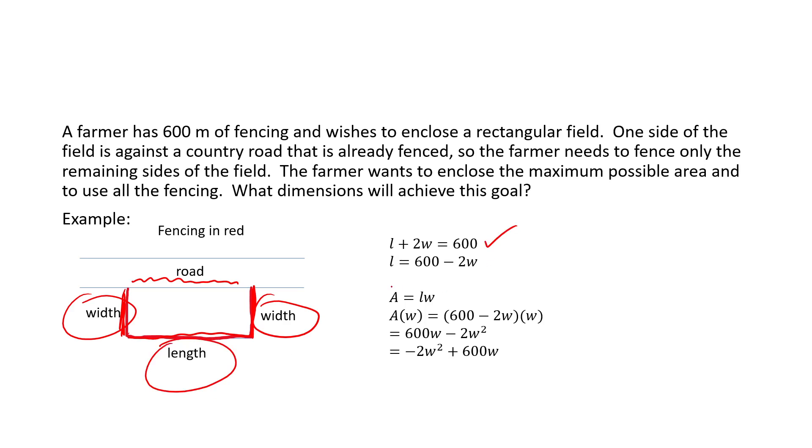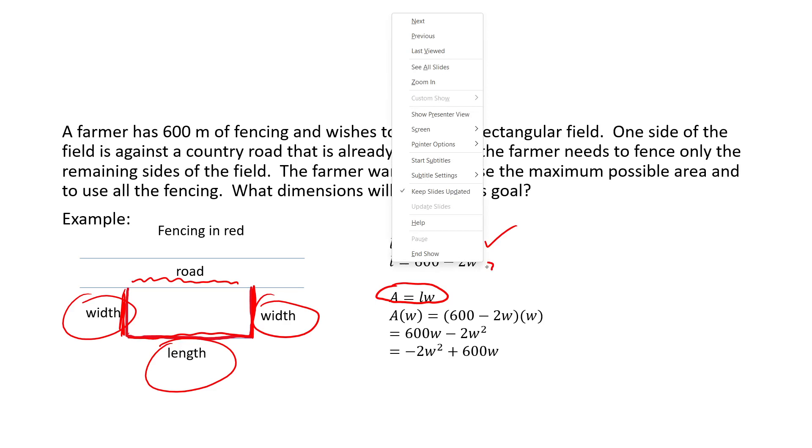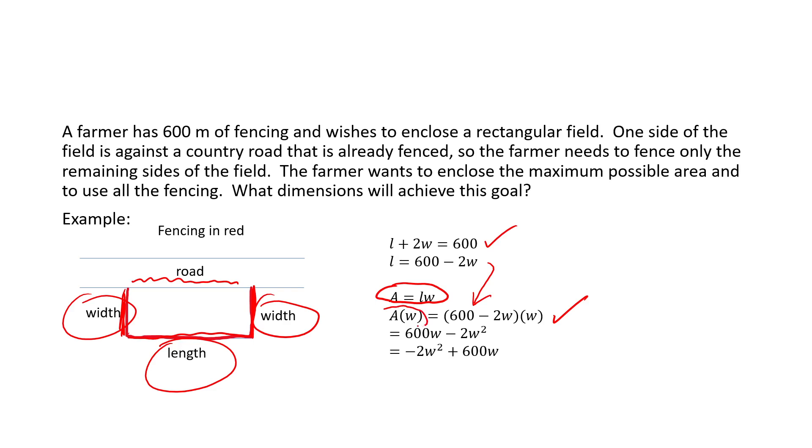Eventually we're going to have a formula for area of the rectangle, which is length times width, but we don't want to have two variables there. So we're going to isolate for L and say L is 600 minus 2W. That allows us to substitute so we can say 600 minus 2W times W. Since we only have one independent variable, we'll use function notation and say A of W is 600 minus 2W times W.